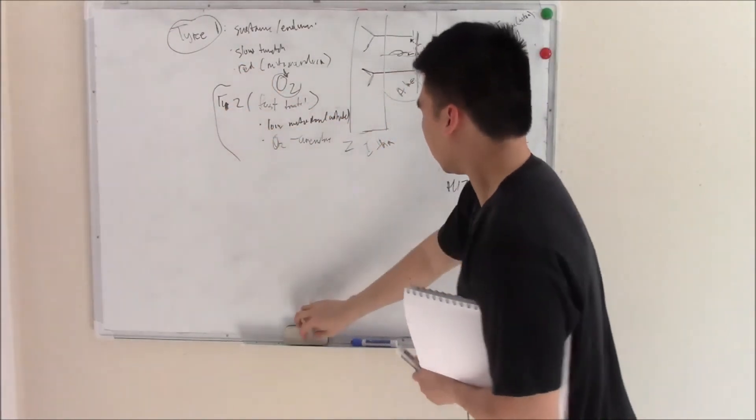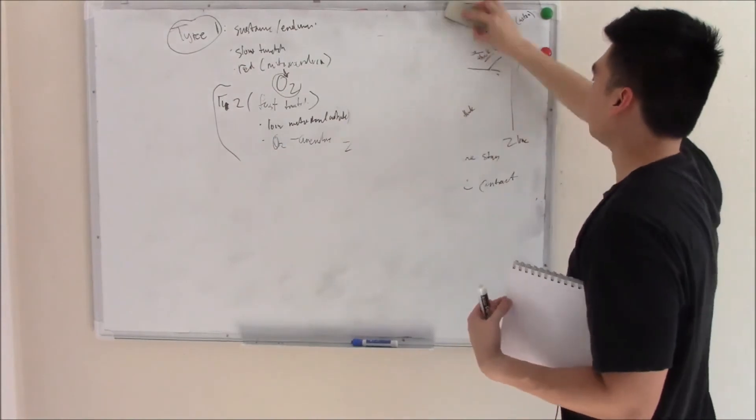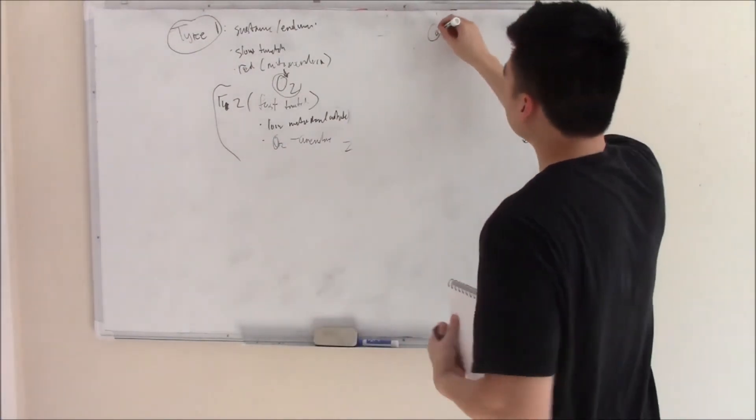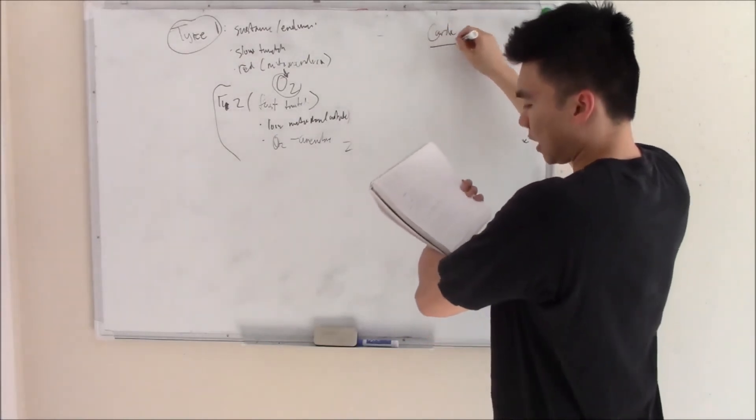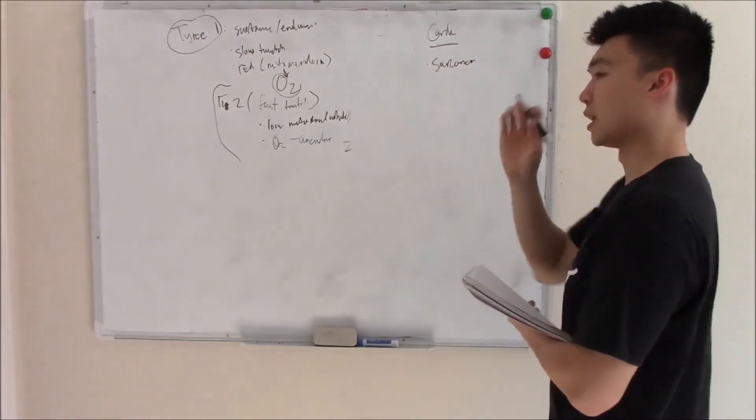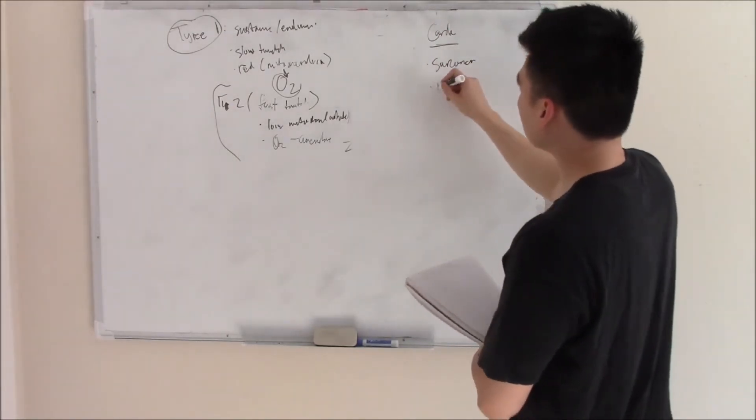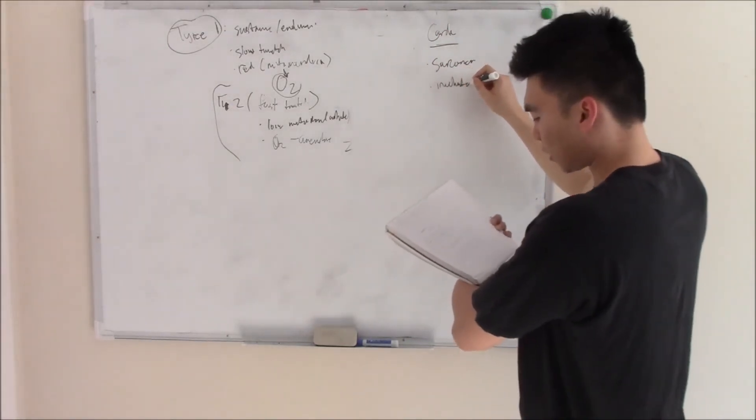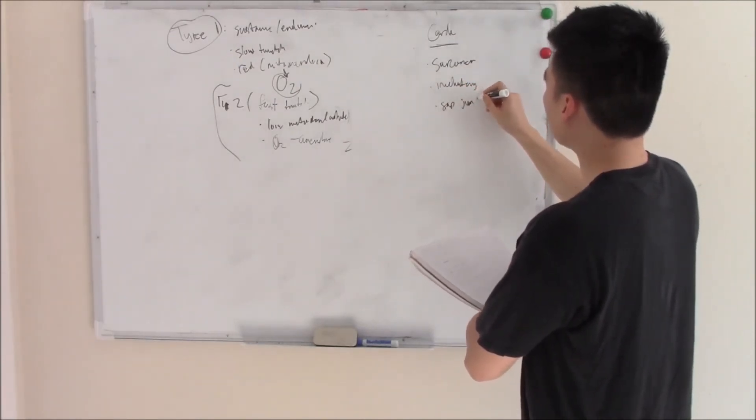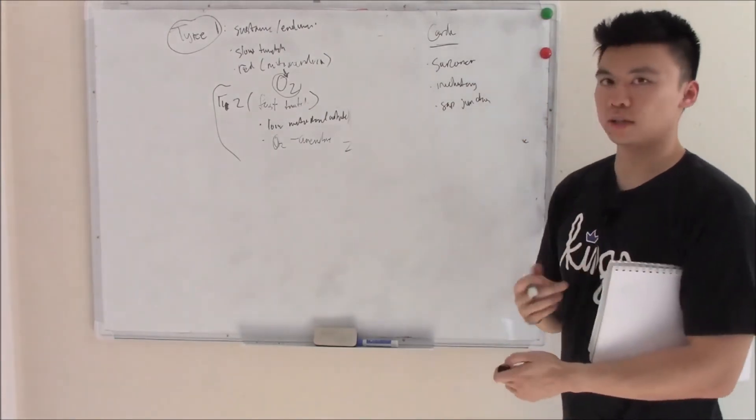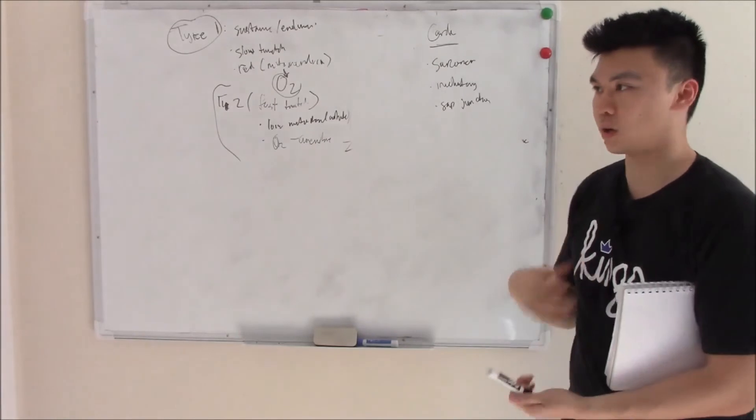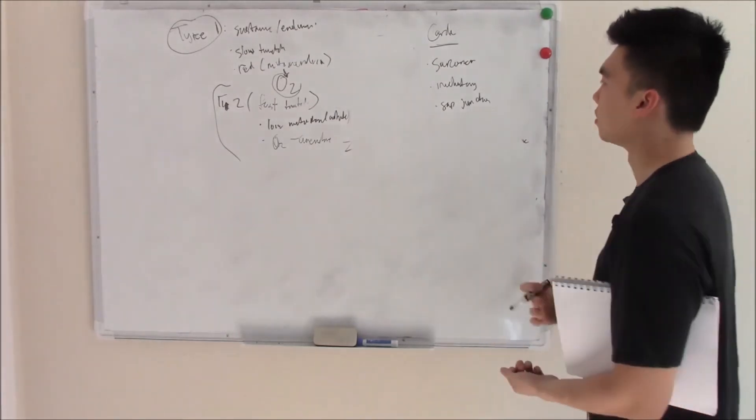Let's move on to cardiac muscle. Cardiac is seen in your heart. It's a sarcomere, kind of like skeletal muscle, but it differs because it's involuntary. Also, it has gap junctions. Your heart muscles have gap junctions because they need to coordinate with each other. When it depolarizes, all of it needs to depolarize in a coordinated fashion, otherwise you have arrhythmia.